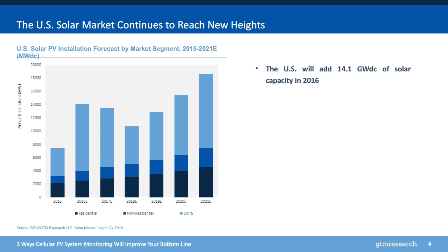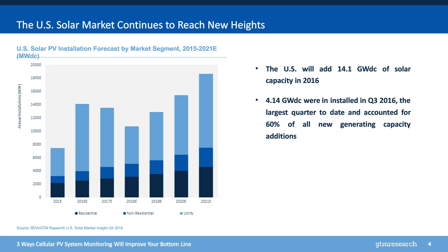As you can see, the U.S. solar market's booming. After all the figures are totaled, installations will have reached a record 14 gigawatts in 2016 due to the huge amounts of projects built upon the previously expected federal investment tax credit step down, before receding a bit in 2017 and 2018. GTM Research and SEIA's Q4 Solar Market Insight report was released just a few weeks back, so these numbers are fresh. In Q3, 4.14 gigawatts DC of solar was installed — the largest quarter for solar installations ever in the United States. Solar accounted for 60% of all new generating capacity in the quarter, which was also a record. And nearly 34 gigawatts of solar has now been installed in the U.S., with over 1.25 million systems online.